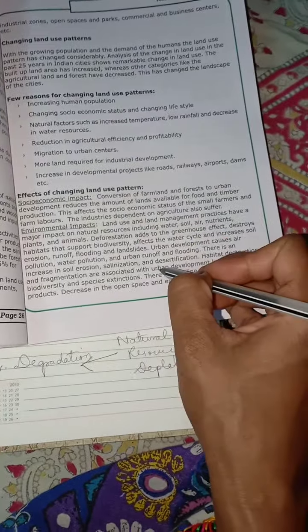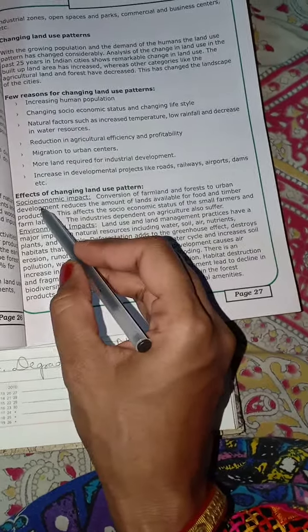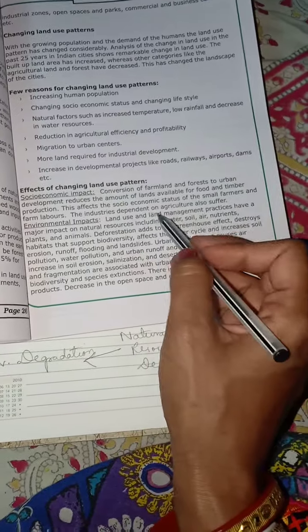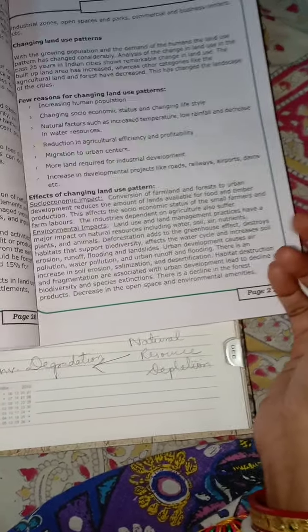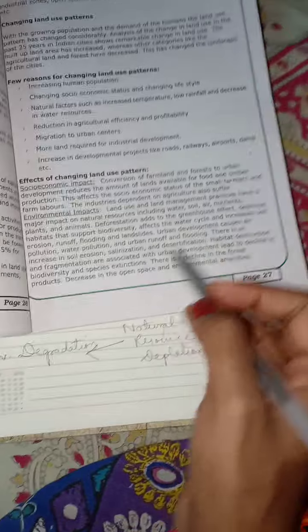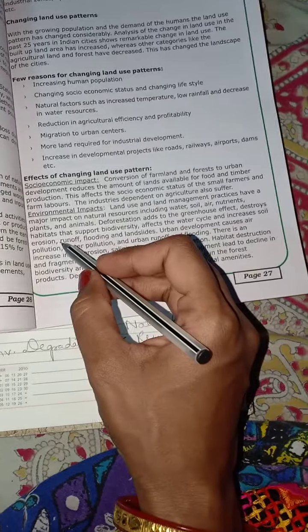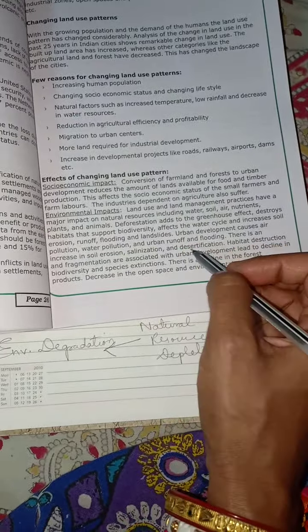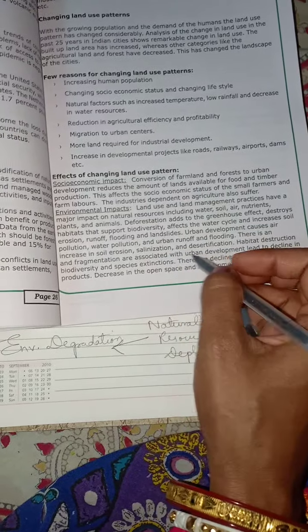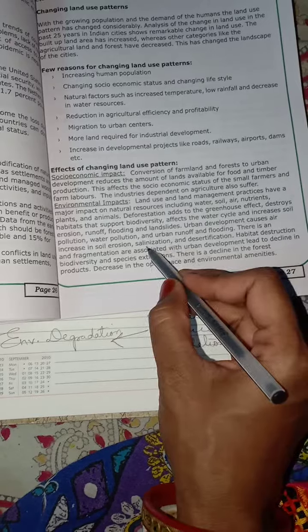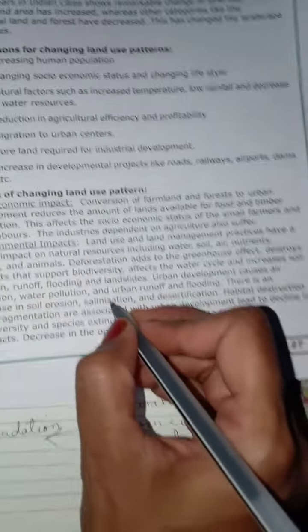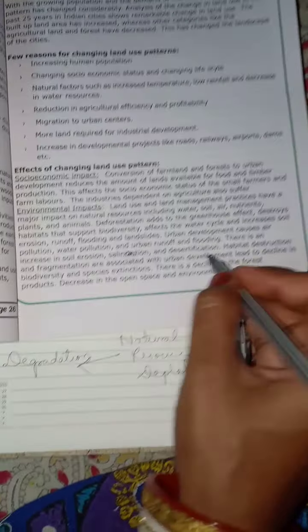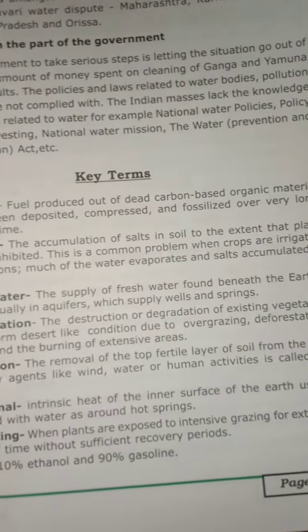Land use pattern affects the socio-economic impact by converting agricultural land into other forms, hampering land quality. Environmentally, it causes deforestation, destroys habitats, causes loss of flora and fauna, leads to urban development causing water and air pollution, soil erosion, salinization of soil, and desertification. These are all the various impacts of changing land use pattern.